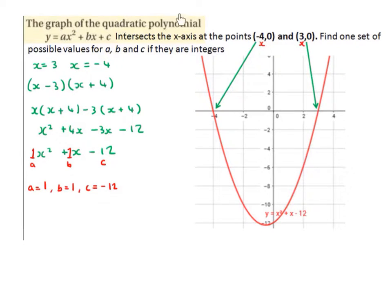The graph of the quadratic polynomial y equals ax squared plus bx plus c intersects the x-axis at the points (-4, 0) and (3, 0). Find one set of possible values for a, b, and c if they are integers—integers being positive or negative whole numbers.